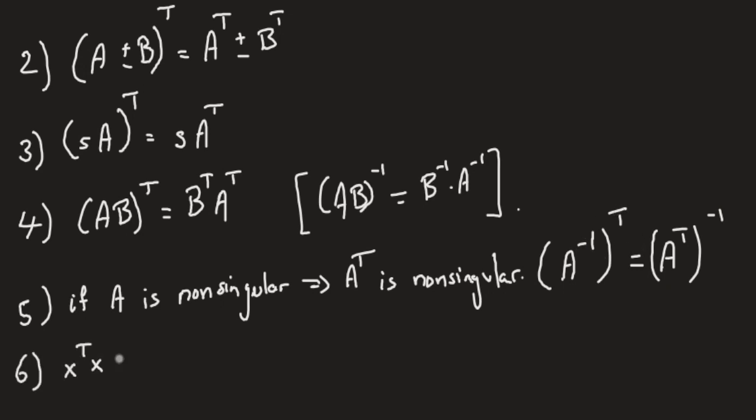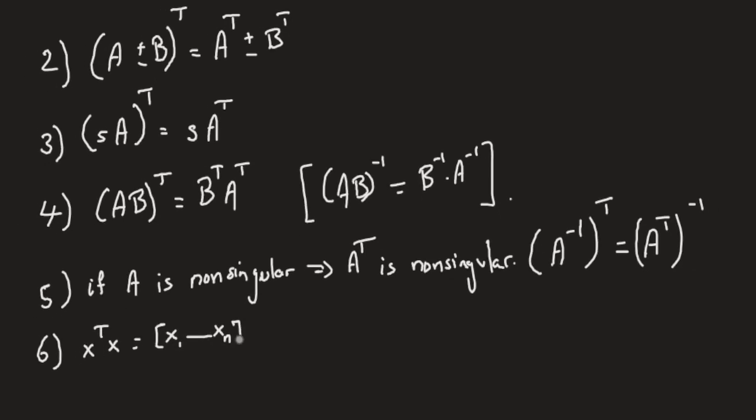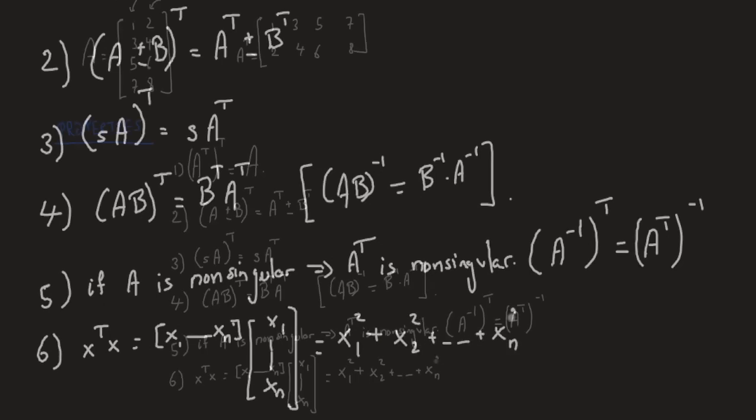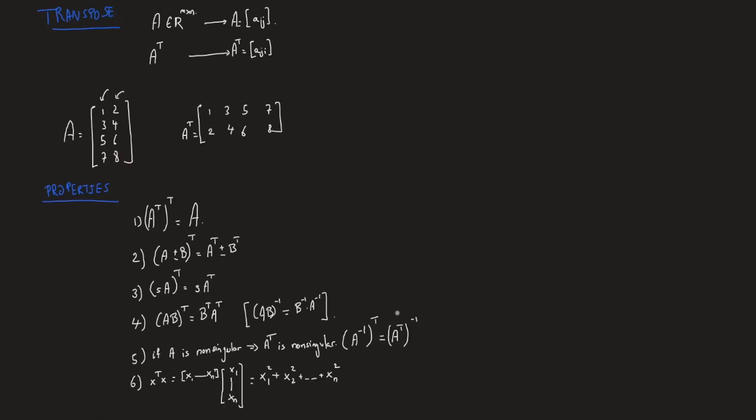And six, doing an inner product on a vector, that is x1 down to xn as a row, multiplied by x1 down to xn as a column, that is the sum of squares of each of its entries: x1 square plus x2 square down to xn square. So that's about it on the transpose of a matrix. We defined what a transpose is, we talked about the properties of transposition.